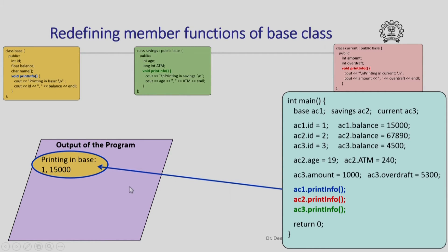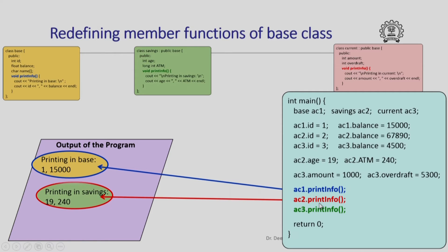When I call AC2.print info, the method print info has been redefined in this derived class, and this redefined definition is going to take effect. It is not the print info in the base class that is going to get executed because it has been redefined in the derived class. So when I call AC2.print info, it says 'printing in savings' and gives the value of age and ATM of AC2, in this case 19 and 240.